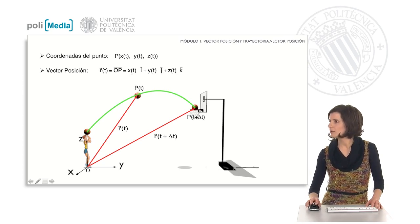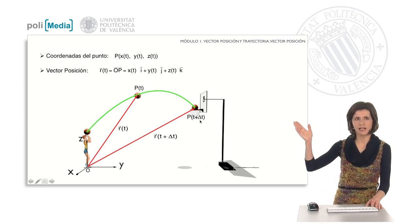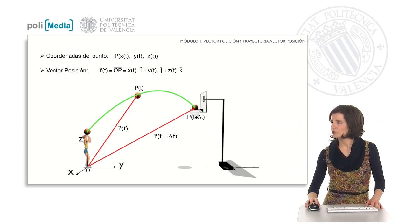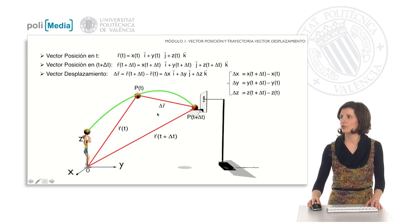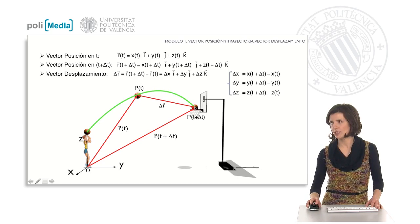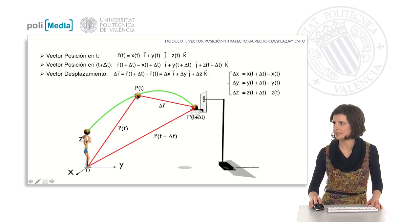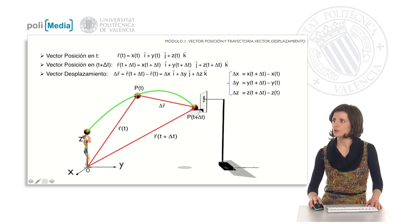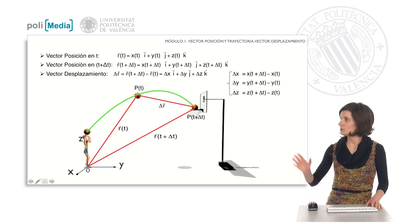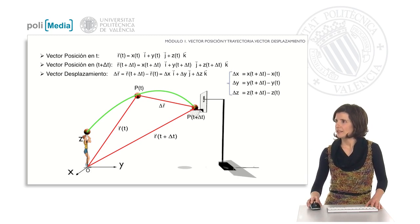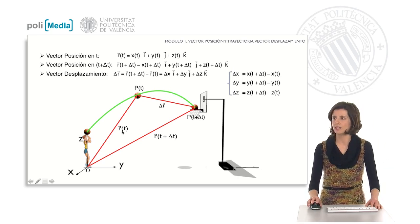For example, after an incremental time interval of t, we see that the ball arrives at the basket. At this instant of time, both the coordinates of point P and the components of the position vector have changed. The displacement vector is defined as the vector joining two positions at two different instants. For example, at instant t the ball is in this position, and at instant t plus increment of t it is in the basket. The displacement vector increment r is the vector joining these two positions. Graphically, the displacement vector is the position vector at instant t plus the increment of t, minus the position vector at instant t.